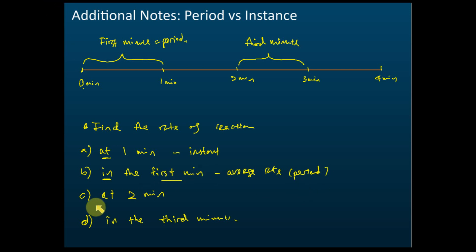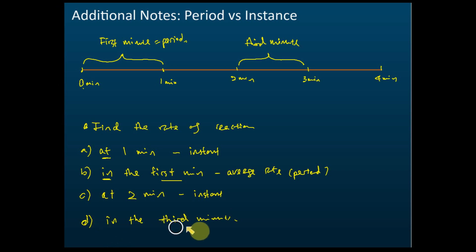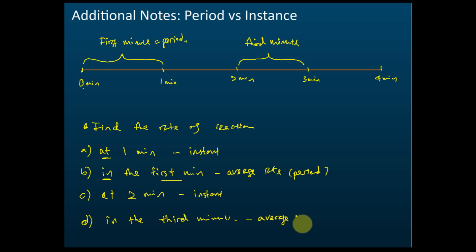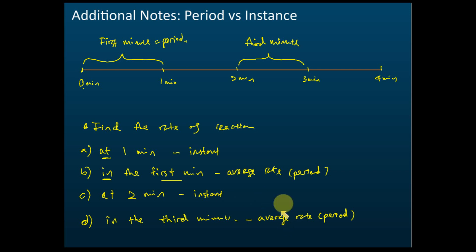Because 'in the first minute' is a period of time, you find the average rate. (c) 'At two minutes' means exactly at two minutes — this is an instant, so you find the instantaneous rate. (d) 'In the third minute' means from two minutes to three minutes — a period — so you find the average rate. This is the most confusing part for students when first learning to find rate of reactions from a graph.